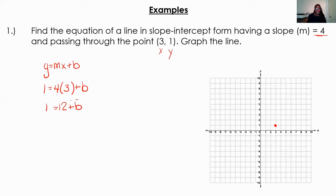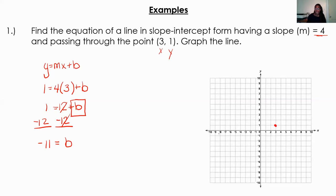They gave us the slope, but now we need to know what B is — the Y-intercept. So we got 4 times 3, which gives me 12, then bring everything down. I want to get B by itself, so what's in the way is this positive 12. I have to do the inverse, which is subtract 12 on both sides. 12 minus 12 gives me zero — don't need that placeholder because I still have B. So 1 minus 12 gives me negative 11. My Y-intercept is at negative 11.